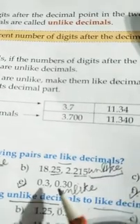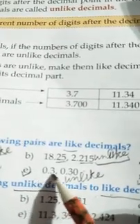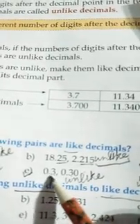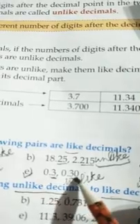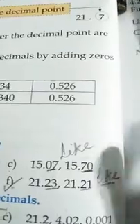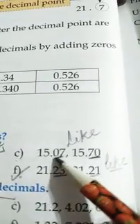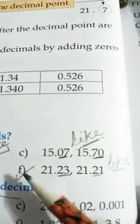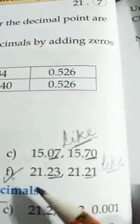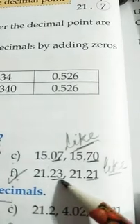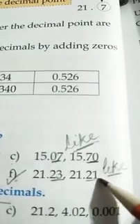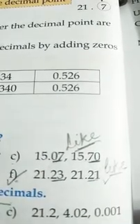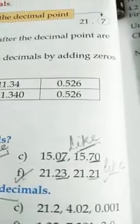In part e, 0.3 and 0.30 — one digit here and two digits here — so these are also unlike decimals. In part c, after the decimal two digits and two digits, so these are like decimals. In part f also, after decimal two digits and two digits, so these are like decimals.